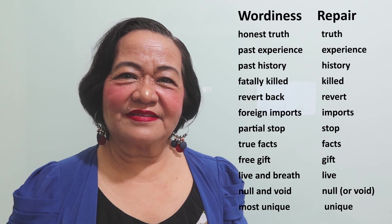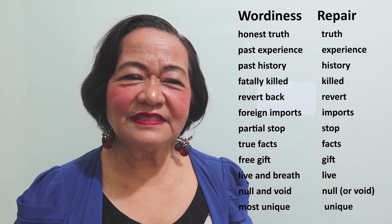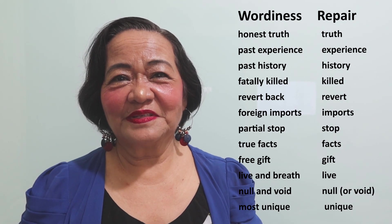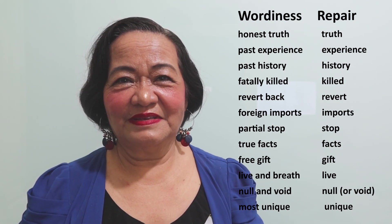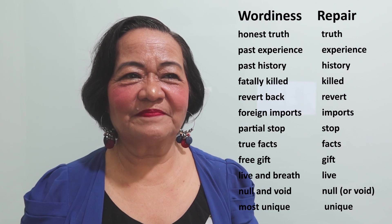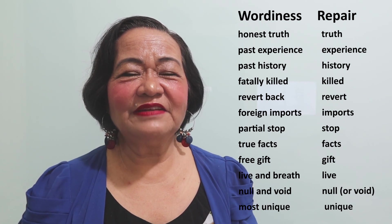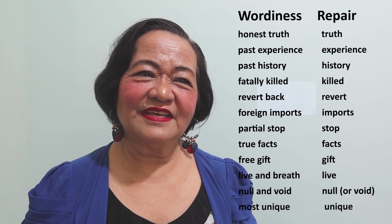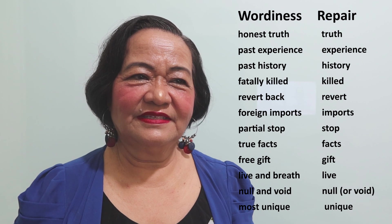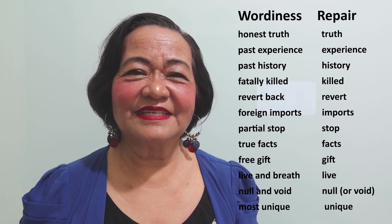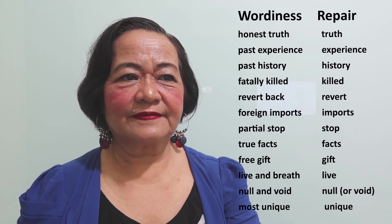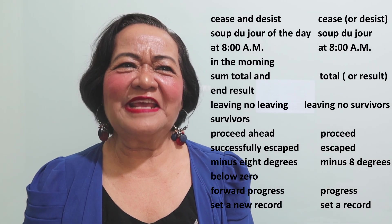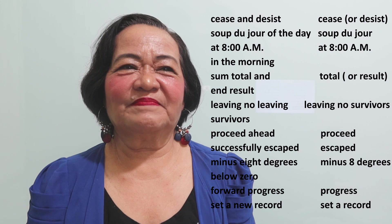Next, 'live and breathe' — just say 'live,' because when you breathe, you live. 'Null and void' — the same meaning, so just say 'null.' 'Most unique' — just say 'unique.' 'Seize and desist' — the same meaning, so just get one: 'seize.'